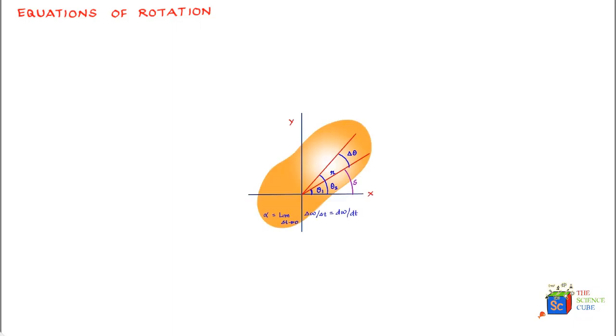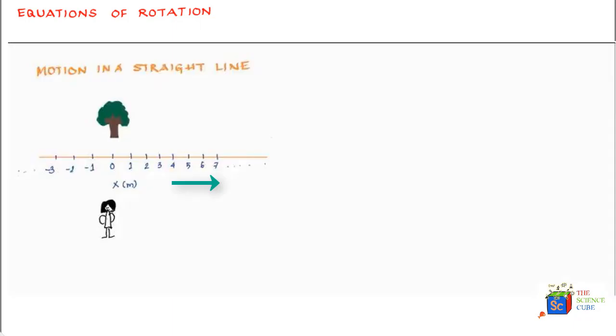This lesson covers how the motion of a rigid body or a particle undergoing rotation can be represented through mathematical equations. To do so, let us recall the motion of a particle in a straight line. We know that the direction of motion can be represented by a plus sign if it's moving to the right, or a negative sign if it is moving to the left.